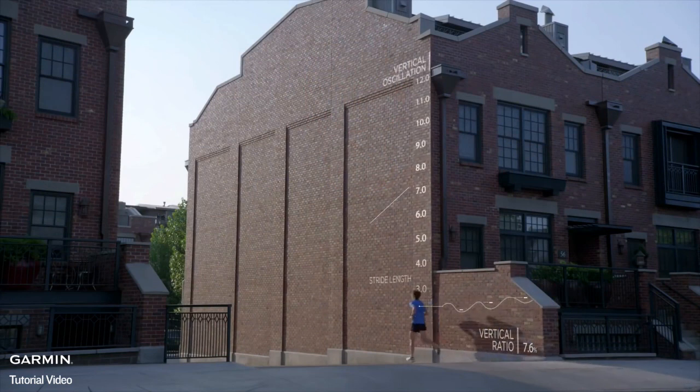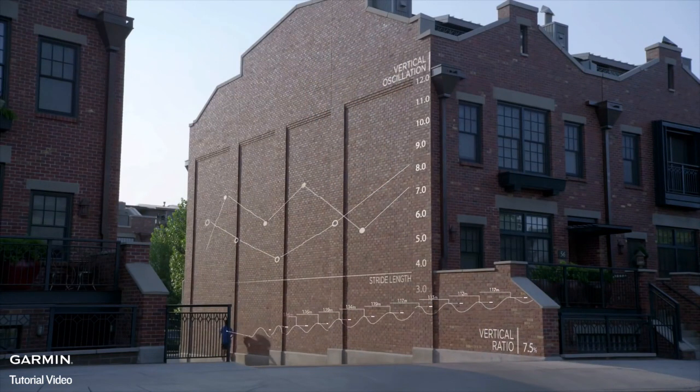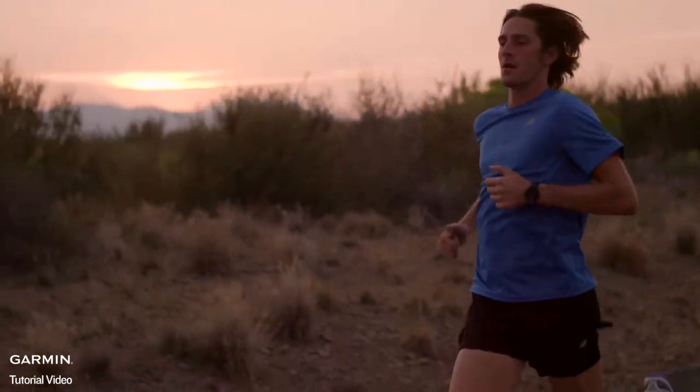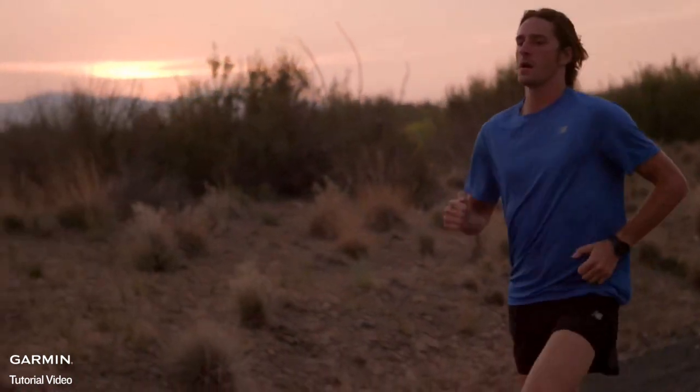Next is vertical ratio, a metric that reflects running efficiency, or how well you propel yourself forward. By the numbers, vertical ratio is your vertical oscillation, or amount of bounce, divided by stride length, expressed as a percent. It is a cost-benefit ratio for running. Stride length is the distance traveled horizontally — it is the benefit. This horizontal travel requires some amount of vertical motion that is not moving you toward your destination; it is the cost of traveling forward. So a low number for vertical ratio indicates a small cost for a large benefit, and that's right where you want to be for efficient running.